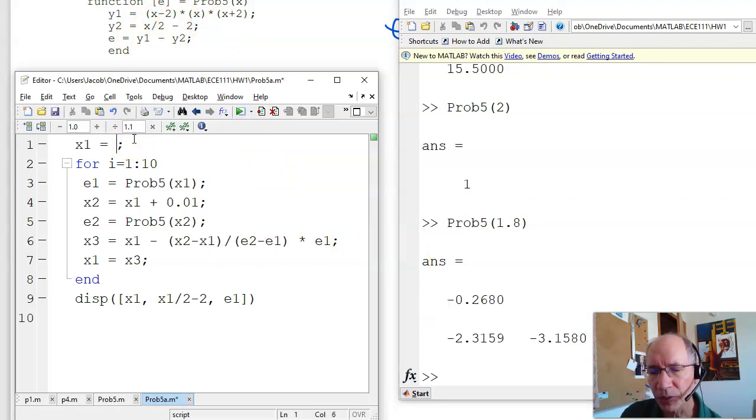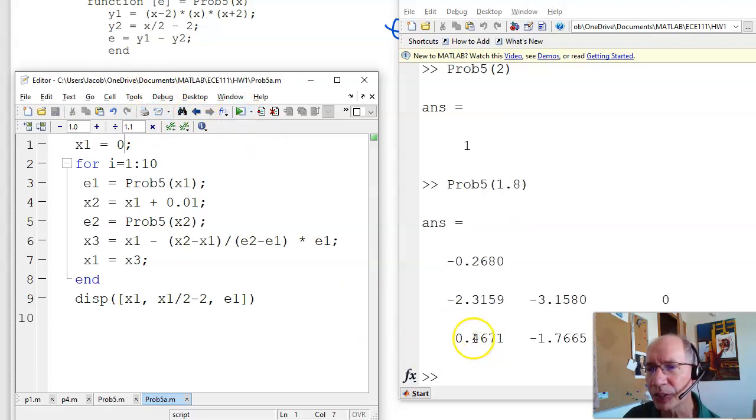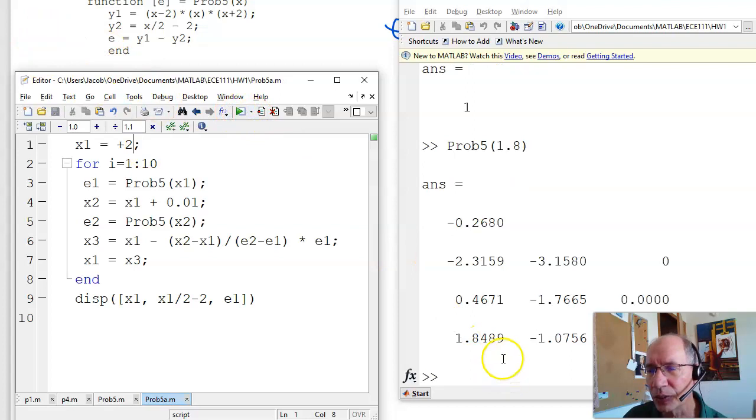If I try that as my initial guess, it'll iterate and find the solution close to zero. It's actually 0.4671. If I try plus two, the solution is 1.8489.